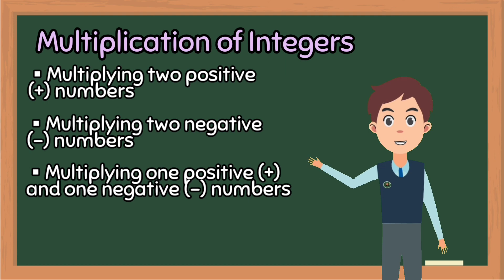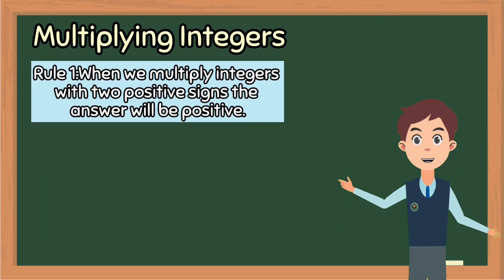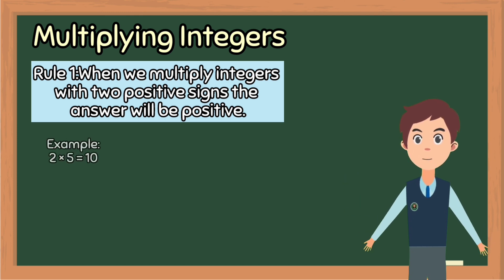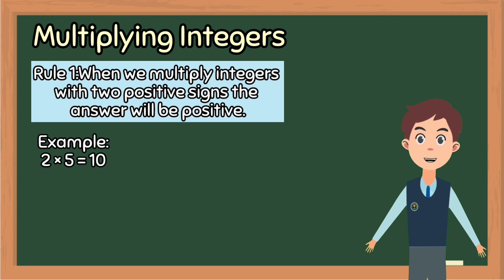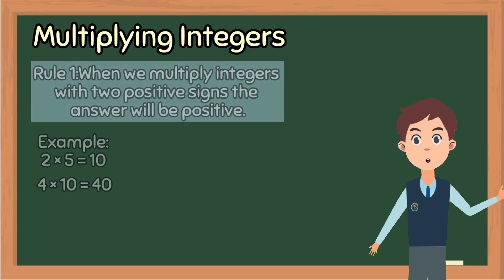Rule number one: when we multiply integers with two positive signs, positive times positive equals positive. For example, 2 times 5 equals 10. Another example, 4 times 10 is equal to 40.